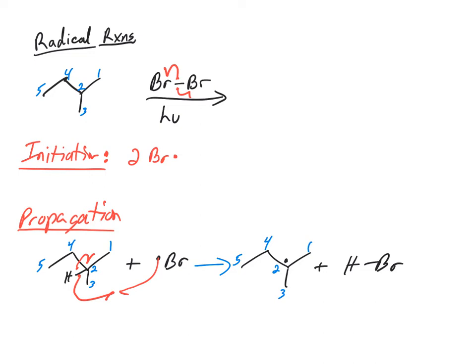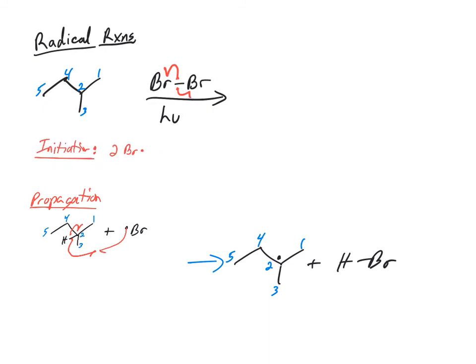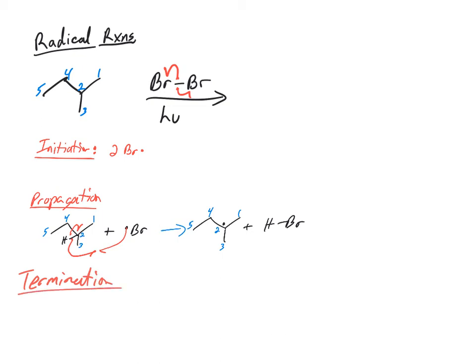And the final step is actually something called a termination. Let me just shrink this stuff up here and get out of the way. The final step is going to be something called a termination. That's when two radicals will come together. So in this case, we still have two HBr, we had two Br dots. So one of those bromines is still around. What's going to happen?